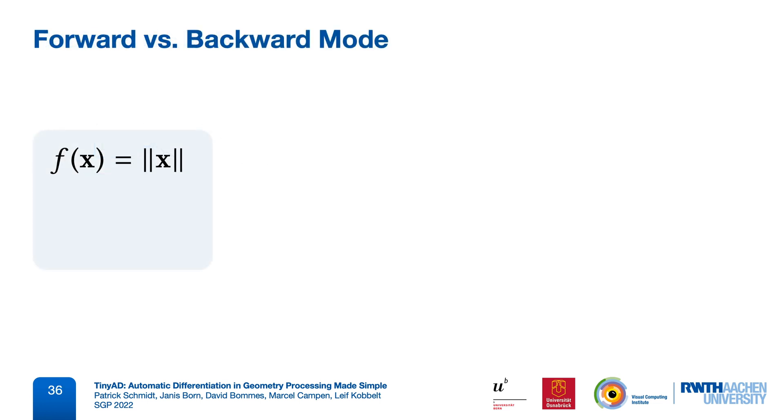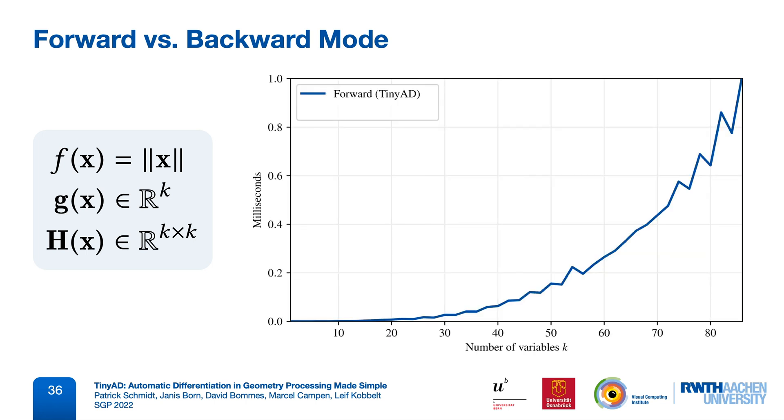We did an experiment with a simple expression, here the Euclidean vector norm, where we computed its gradient and Hessian for increasing sizes. We compared a forward mode implementation to an established backward mode implementation and find that there is quite a large range of problem sizes for which forward mode can indeed be a lot faster. And if we are able to split large problems into small sub-problems, we can benefit from this a lot.